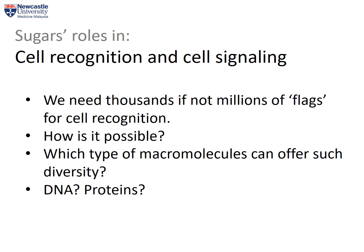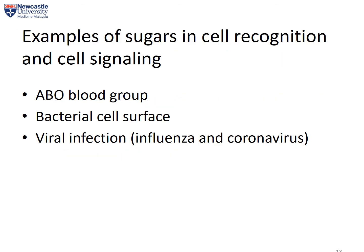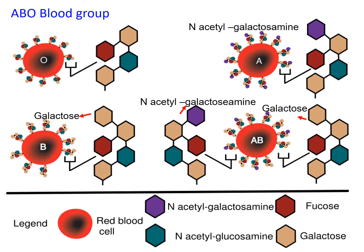So how is this possible? The answer is sugars, because sugars can be arranged in many different structures and there are also many types of subunits. I will give three examples of sugars in cell recognition and cell signaling: the first is the ABO blood group, followed by the bacterial cell surface, and then viral infection by influenza and coronavirus.